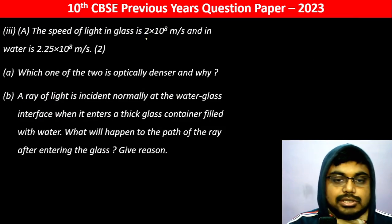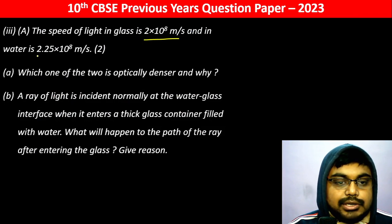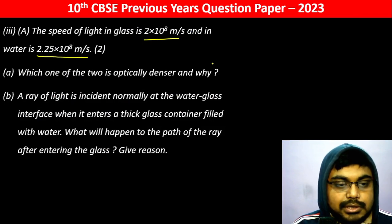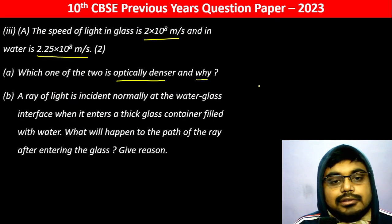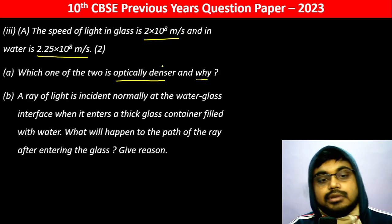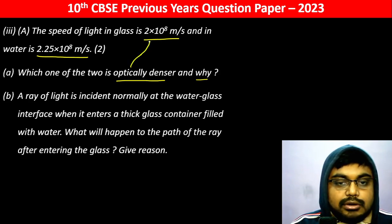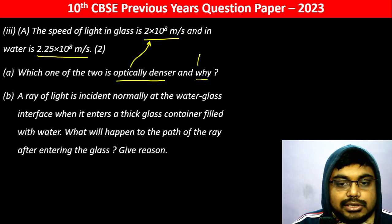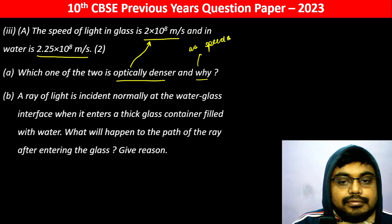The speed of light in glass is 2×10⁸ m/s and in water is 2.25×10⁸ m/s. Which one of the two is optically denser and why? Glass is optically denser — speed of light in glass is lower, so its refractive index is higher.